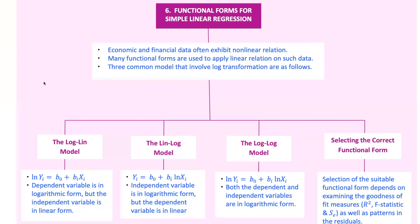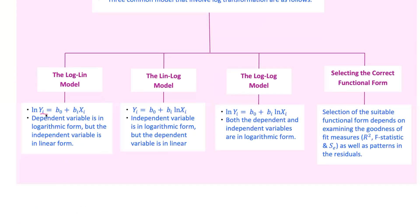In log-lin-model, the dependent variable is in logarithmic form. This is useful when the relationship between the variables is exponential. The slope coefficient b1 represents the absolute change in y for a relative change in x. Suppose you're analyzing the relationship between advertising spend, x, and sales revenue, y. You believe that a 1% increase in advertising spend leads to a consistent percentage increase in sales revenue. You would use the log-lin model to capture this relationship. If you find that b1 is 0.05, it means that a 1-unit increase in x leads to approximately a 5% increase in y.